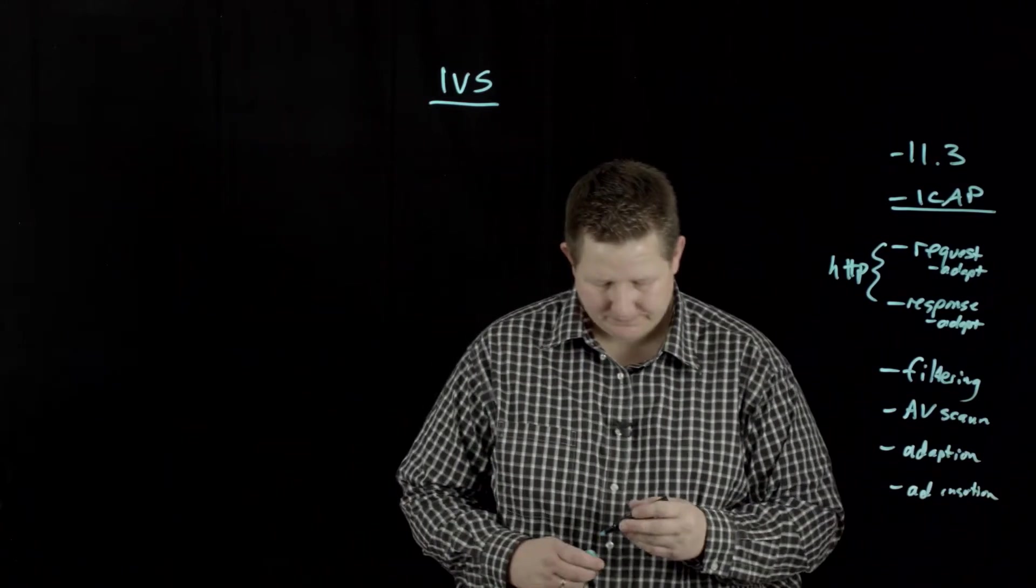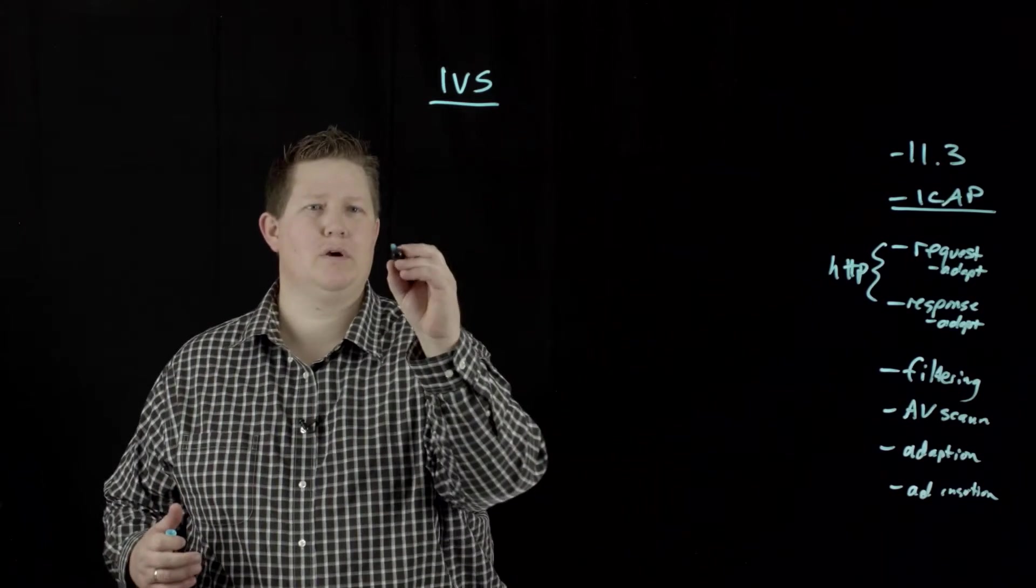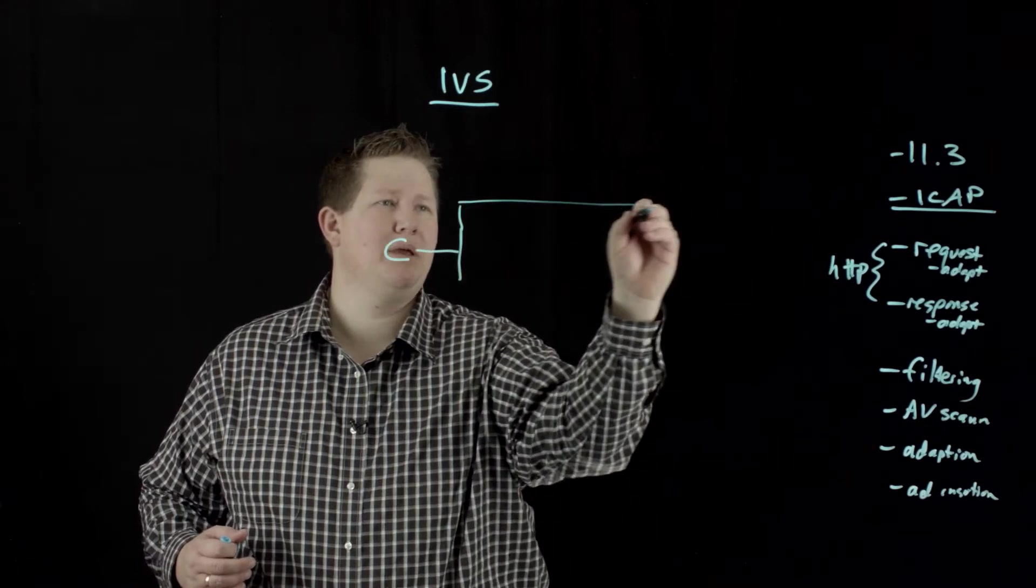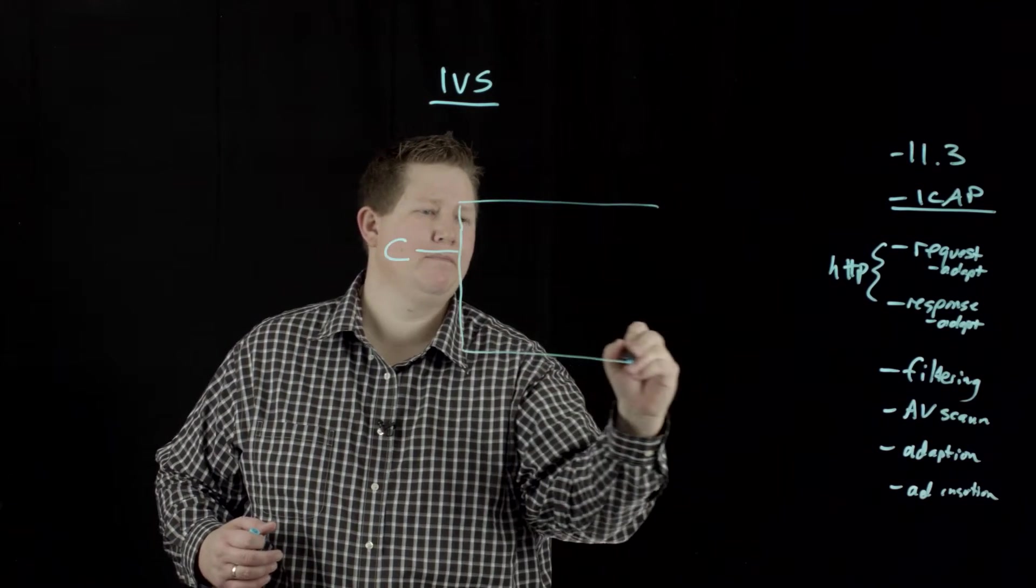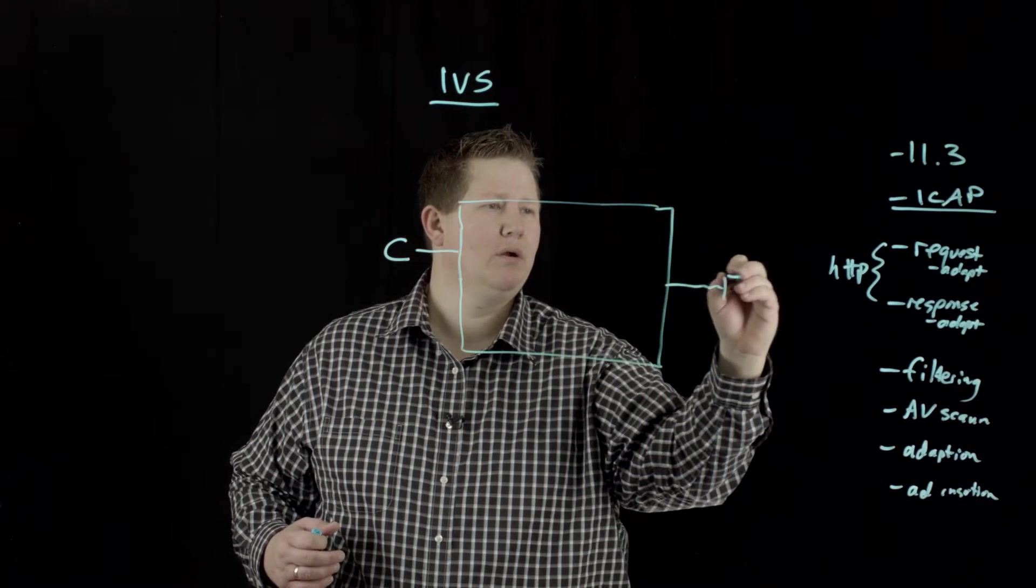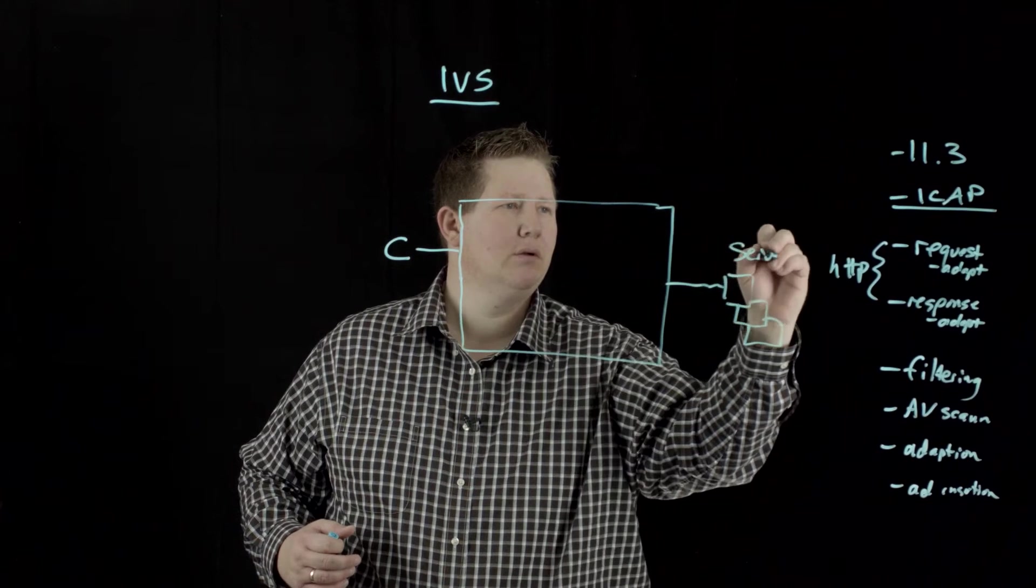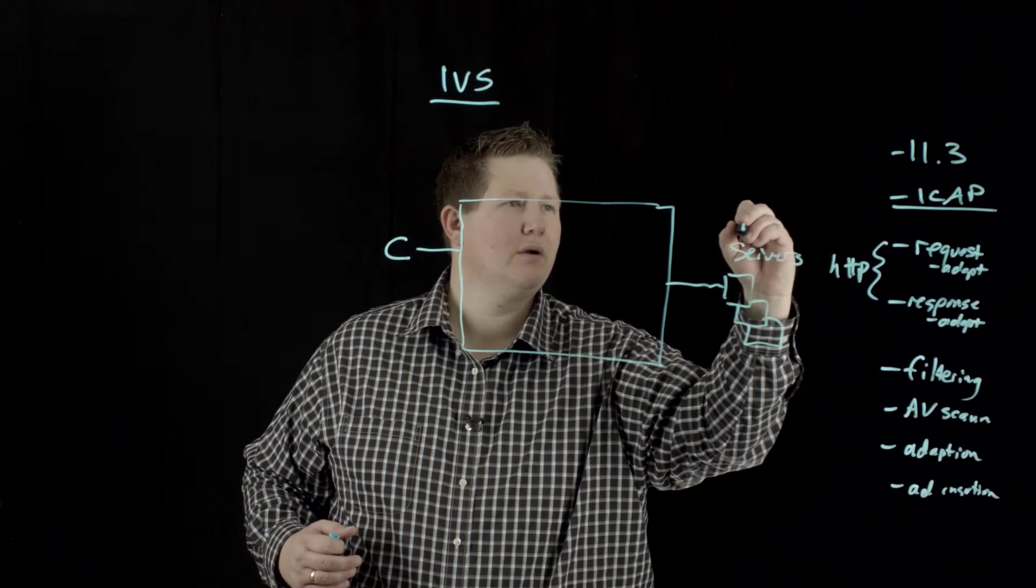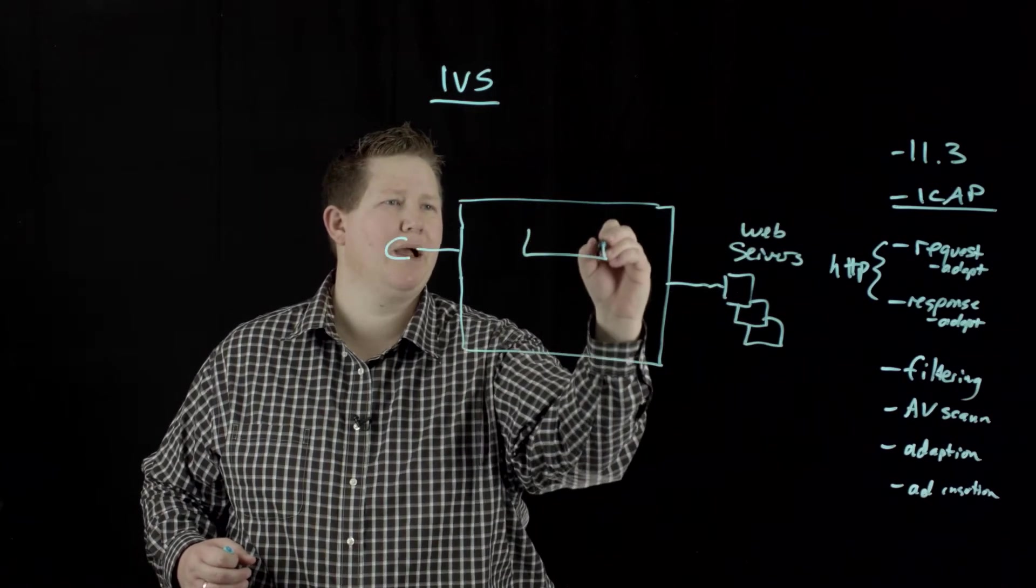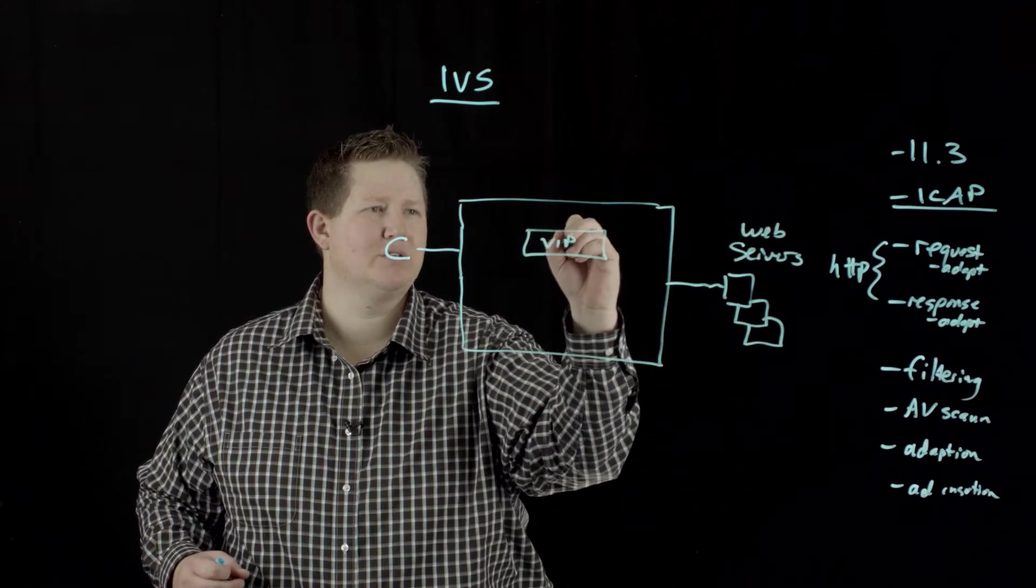So how this works is, I'll draw a client coming in, and we'll draw the BIG-IP a little bigger this time. Then you have your standard servers. So you've got your web servers there, you've got your client, you have your BIG-IP here, and then this is your main virtual server here.